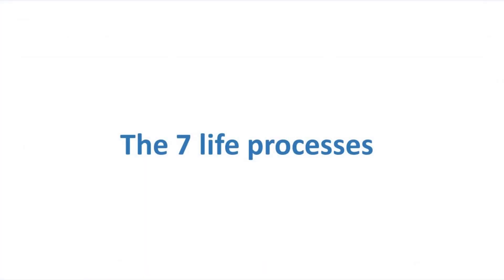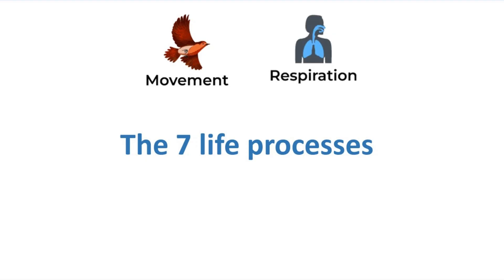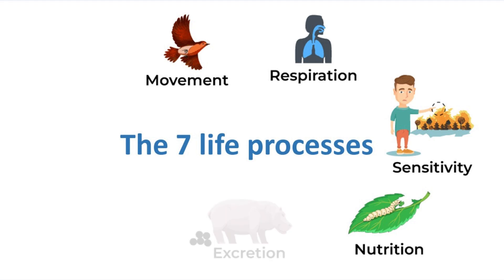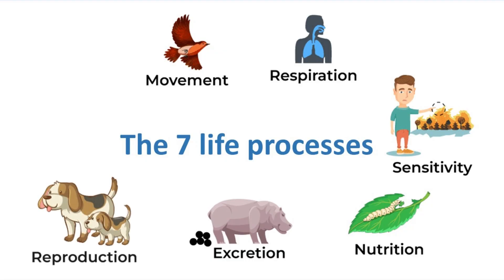You may remember from what you learned last year that living things carry out seven life processes. These are the characteristics of living things: Movement — all living things move, even plants. Respiration — living things breathe and get energy. Sensitivity — living things can detect changes in the surroundings. Nutrition — living things take in and use food. Excretion — living things are able to get rid of waste. Reproduction — living things make more living things of the same type. Growth — all living things grow.